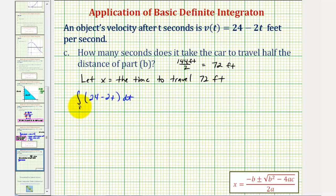from 0 to the unknown time, which we're calling x. And this must equal 72.